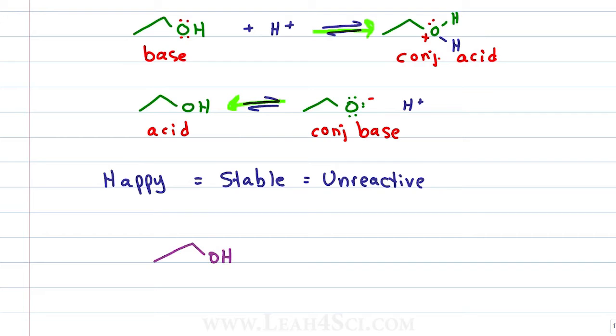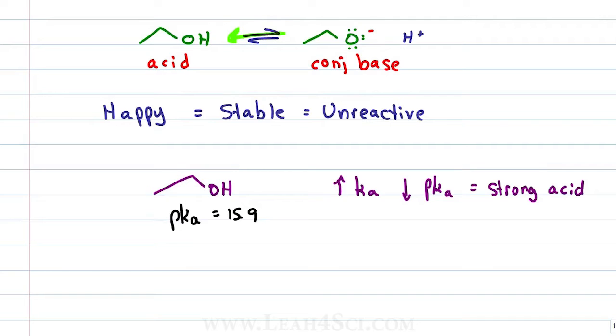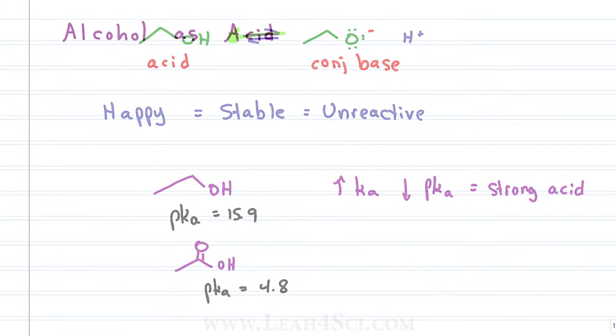Why is that? The pKa of an alcohol like ethanol is 15.9. Remember from general chemistry that when you have a high Ka or a low pKa, that gives you a very strong acid. In the case of 15.9, this is a relatively high pKa and therefore a relatively weak acid. Compare that to something like ethanoic acid. Ethanoic acid has a pKa of 4.8 where every pKa unit is a tenfold increase in acidity.